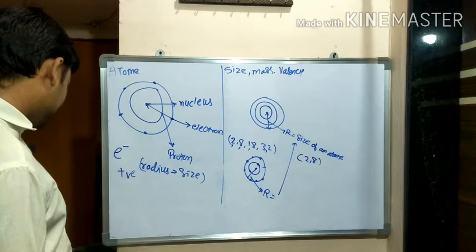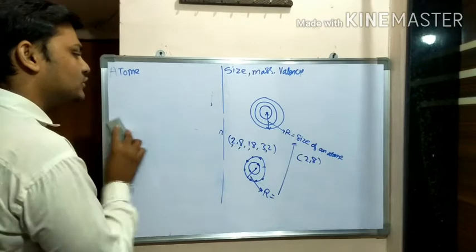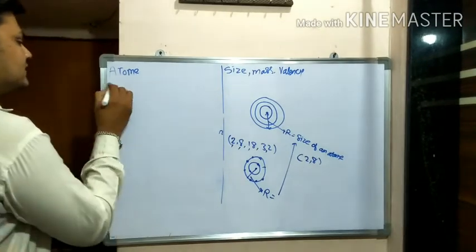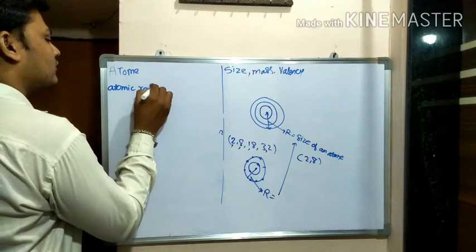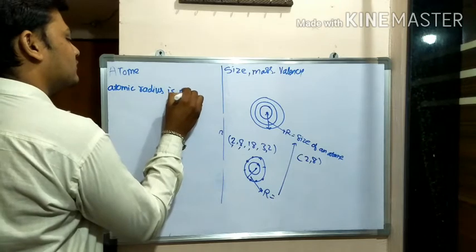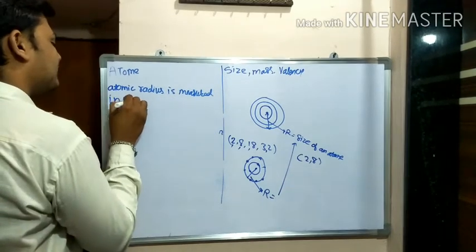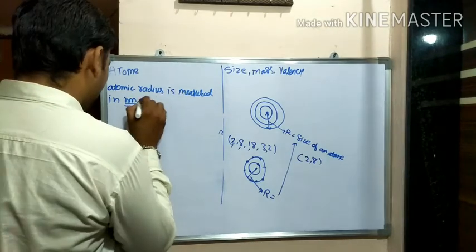Atomic radius is expressed in nanometer. Atomic radius is measured in Nm. What is Nm? Nm is nothing but nanometer.